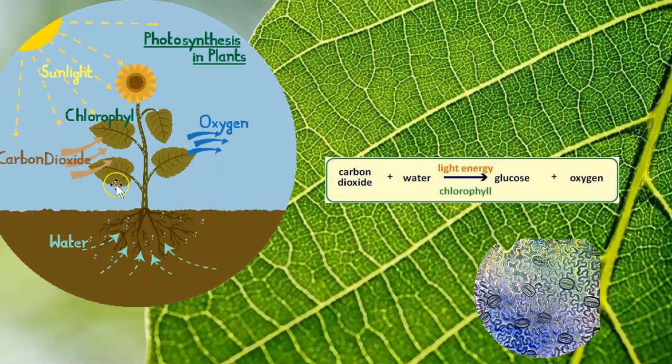It takes water up in from its roots. And it goes through the process of photosynthesis. Photosynthesis takes all of those ingredients and it mixes them up. And what you end up with are glucose molecules and oxygen molecules.